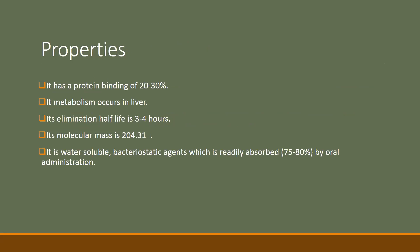Moving towards the properties of ethambutol: it has a protein binding of 20 to 30 percent, its metabolism occurs in the liver, the elimination half-life is around three to four hours, and it has a molecular mass of 204.31 grams per mole.